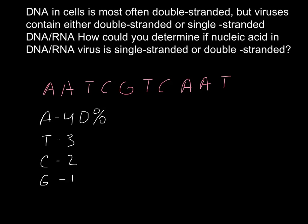40% of the bases that is adenine, 30% of the bases that is thymine, 20% of the bases that is cytosine, and 10% of the bases that is guanine. And what does this information give us? This information gives us a clue.